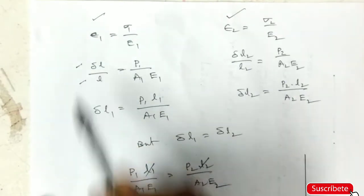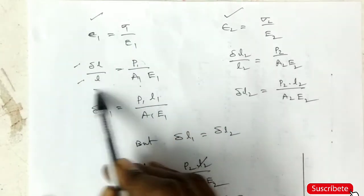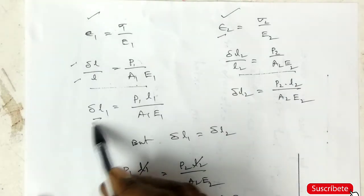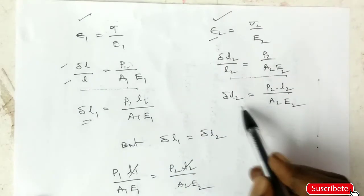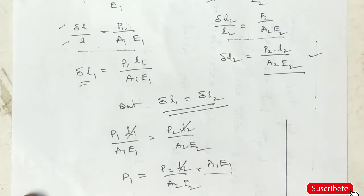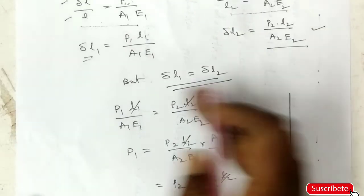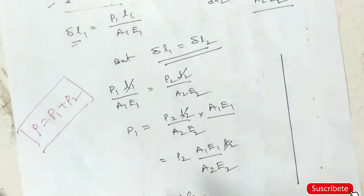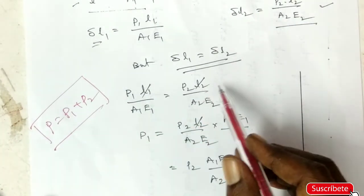Change of length to original length at first material. Sigma is P by A. Strain at bar 1 equals P1 L by A1 E1. Similarly, strain at bar 2 equals change of length, P1 L1 divided by A1 E1 equals P2 L2 divided by A2 E2.